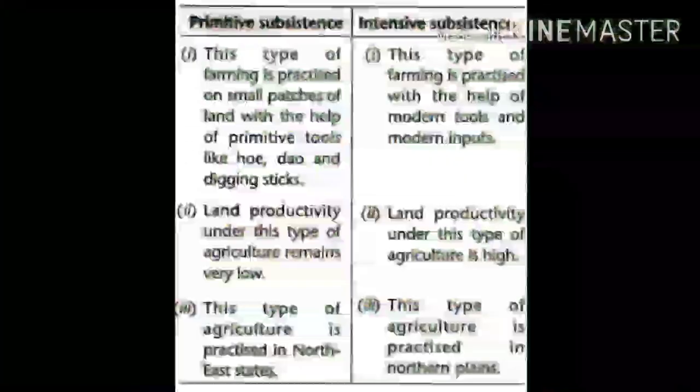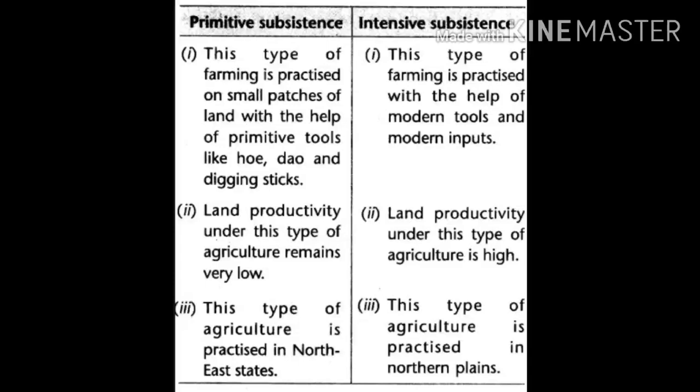Now let us see the difference between primitive subsistence and intensive subsistence. Primitive subsistence farming is practiced on small patches of land with the help of primitive tools like hoe, dao, and digging sticks. Intensive subsistence farming is practiced with the help of modern tools and modern inputs. Land productivity under primitive agriculture remains very low, whereas under intensive agriculture it is high. Primitive agriculture is practiced in north-eastern states, while intensive agriculture is practiced in the northern plains.